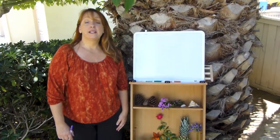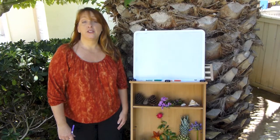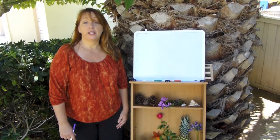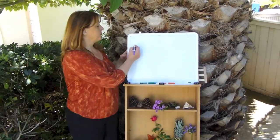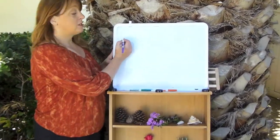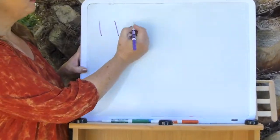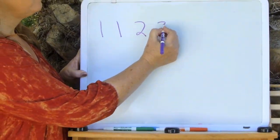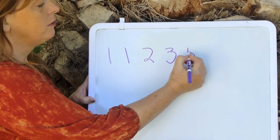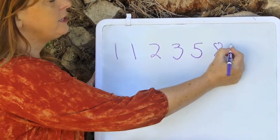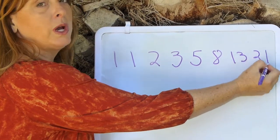Okay guys, let's take a closer look at the Fibonacci series now. Let's start by looking at the first eight numbers in the sequence. The sequence starts 1, 1, 2, 3, 5, 8, 13, and 21.